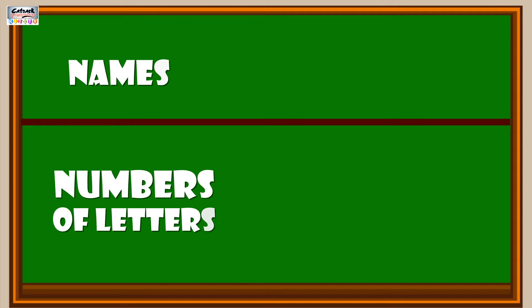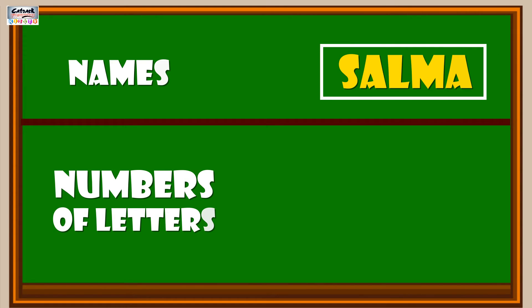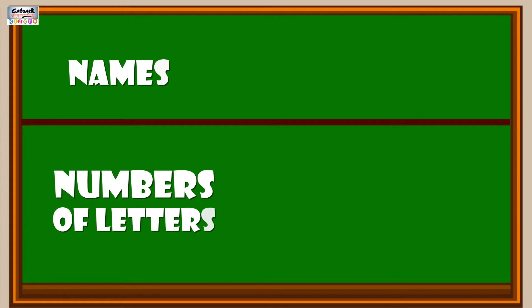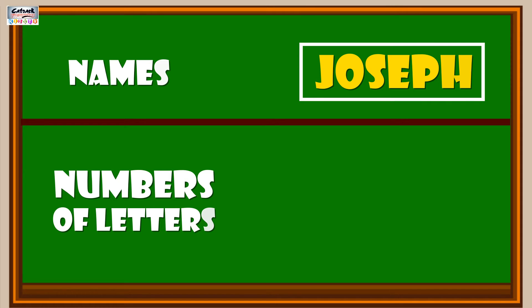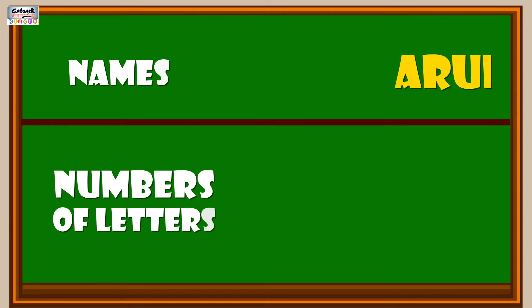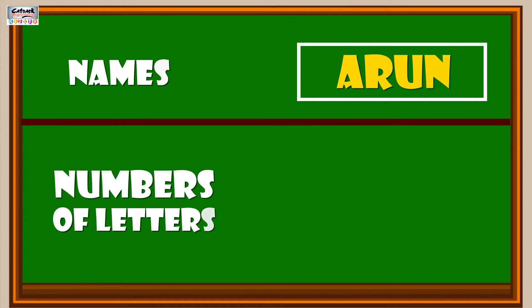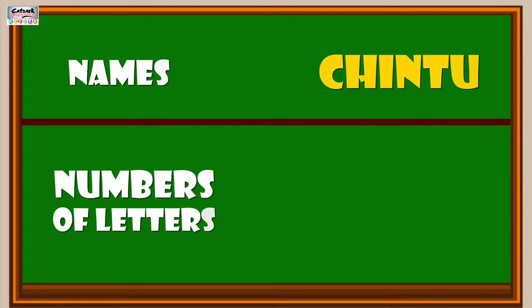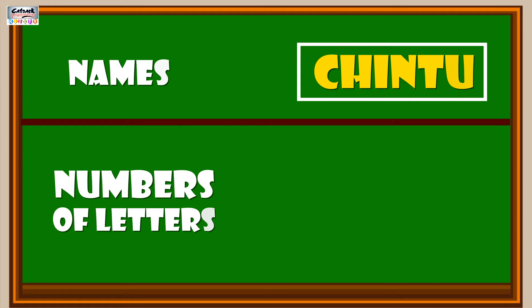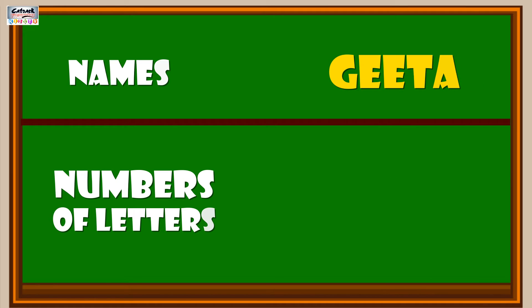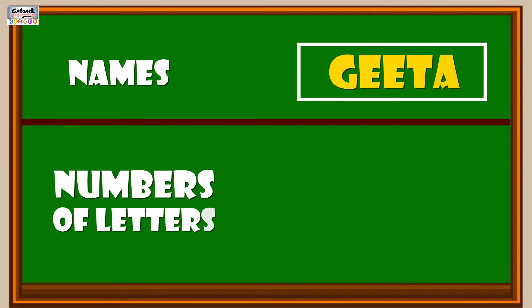Names and number of letters: Salma has 5 letters. Joseph has 6 letters. Arun has 4 letters. Chintu has 6 letters. Geeta has 5 letters.